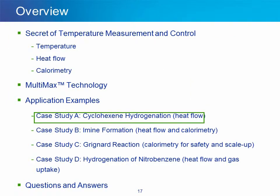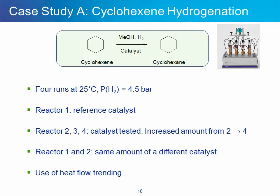Now let's move to the case studies. We are going to start with the hydrogenation of cyclohexene to highlight the power of heat flow training for early feasibility assessment. A Multimax 4×50 system was used for this study, equipped with 50 mL Hastelloy pressure vessels. Cyclohexene is converted into cyclohexane under hydrogenation conditions using a catalyst, hydrogen gas, and methanol as a solvent. Reactor 1 is charged with a reference catalyst or benchmark. The same amount of another catalyst is charged to reactor 2. Reactors 3 and 4 are charged with increasing amounts of the same catalyst as in reactor 2.